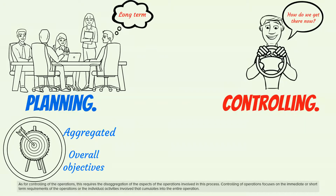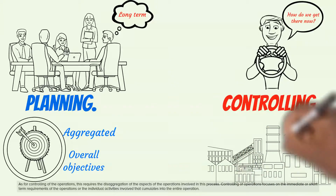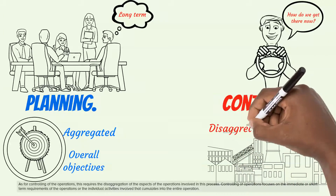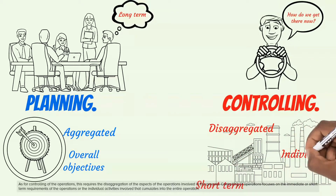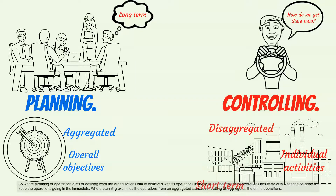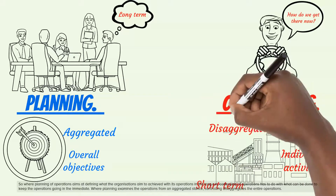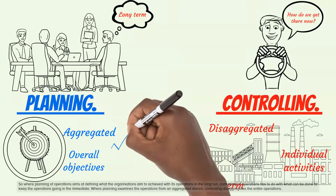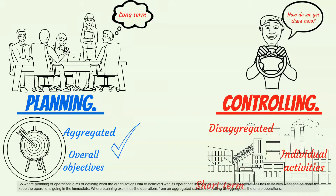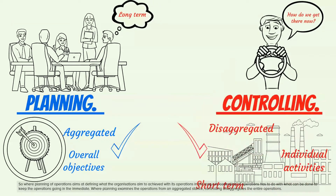As for controlling of the operations, this requires the disaggregation of the aspects of the operations involved. Controlling of operations focuses on the immediate or short-term requirements of the operations, or the individual activities that accumulate into the entire operation. So where planning aims at defining what the organization aims to achieve in the long run, controlling has to do with what can be done to keep operations going immediately. Where planning examines operations from an aggregated stance, controlling disaggregates the entire operations.